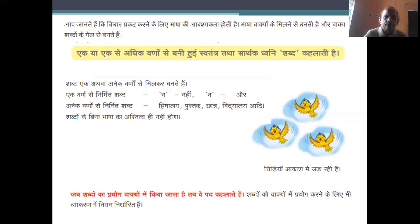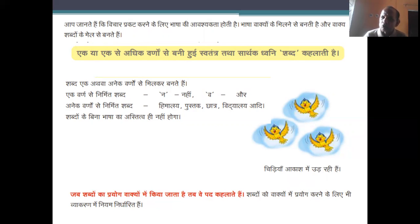हम जानते हैं कि विचार प्रकट करने के लिए भाषा की आवश्यकता होती है। भाषा वाक्यों के मिलने से बनती है और वाक्य शब्दों के मेल से बनते हैं। इसकी परिभाषा या डेफिनेशन ये है — एक या एक से अधिक वर्णों से बनी हुई स्वतंत्र तथा सार्थक ध्वनि शब्द कहलाती है।